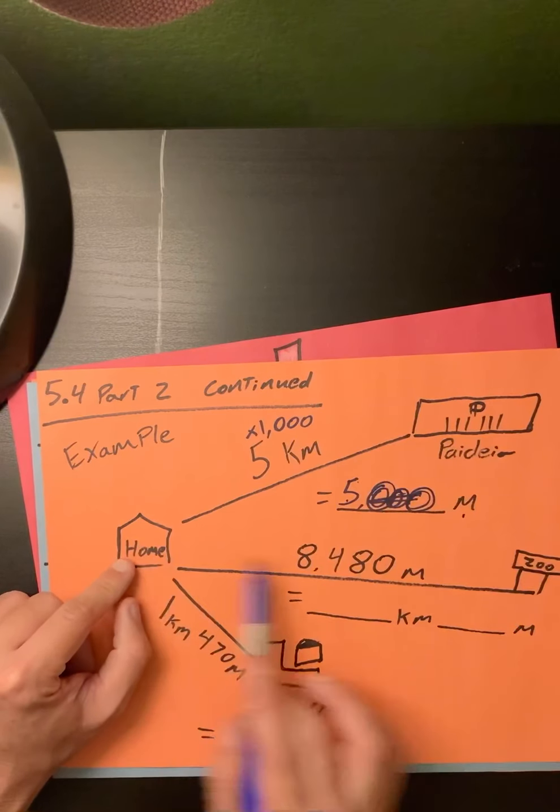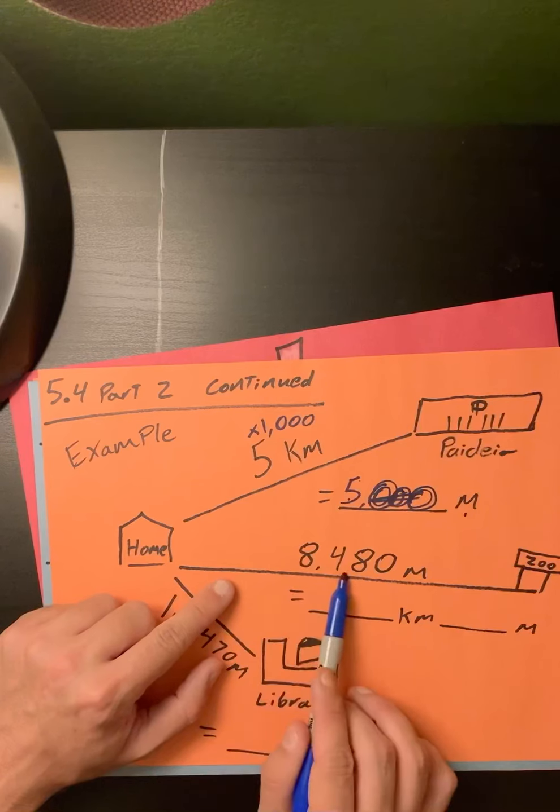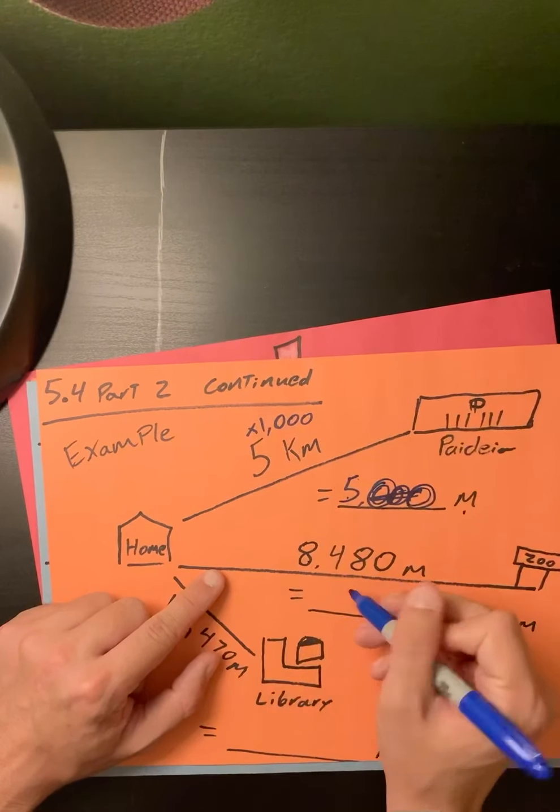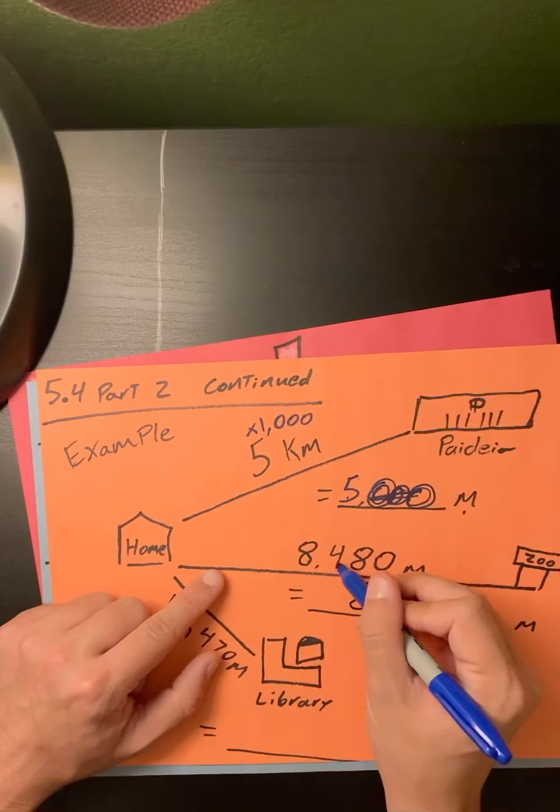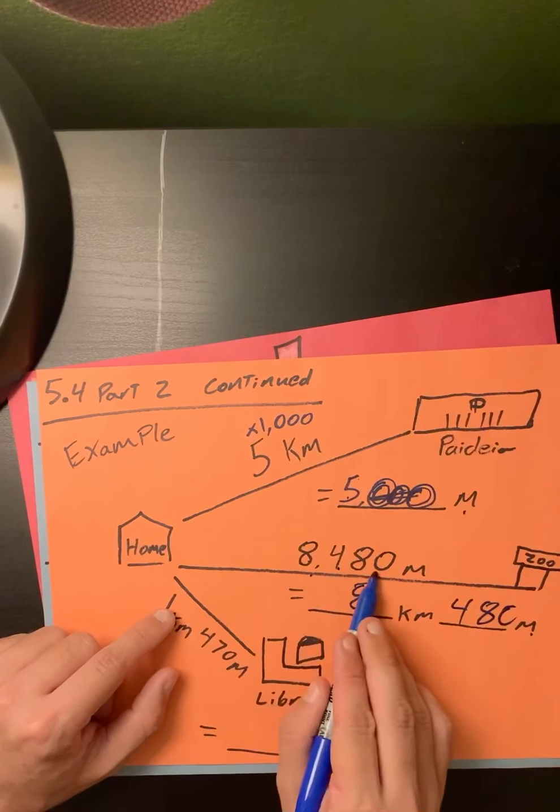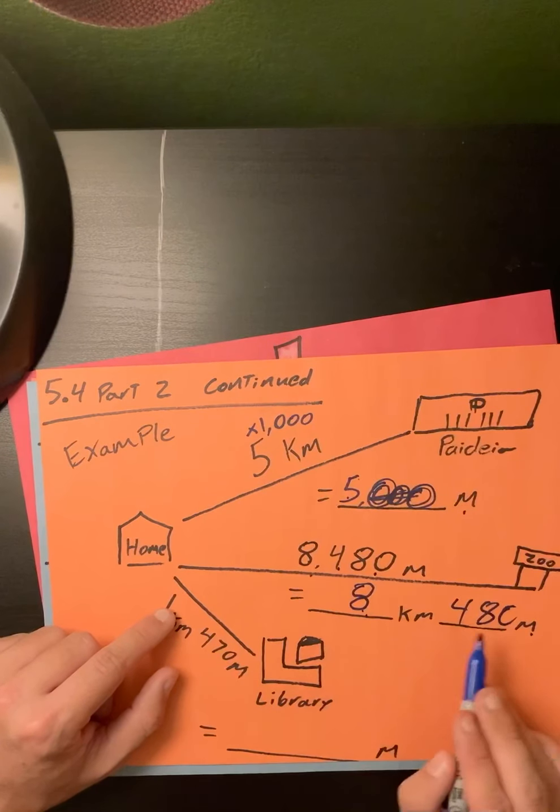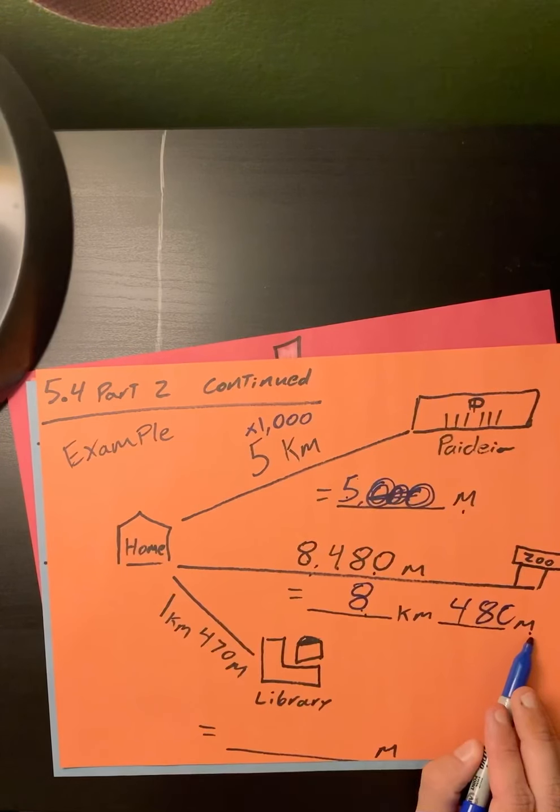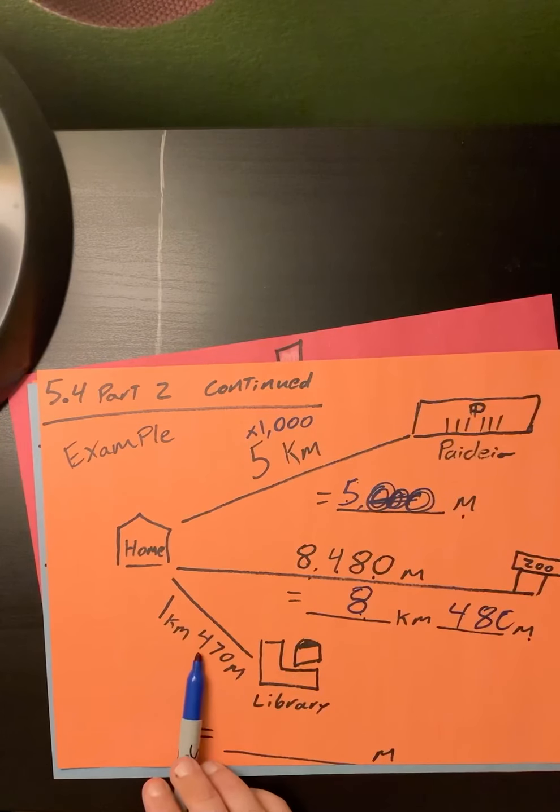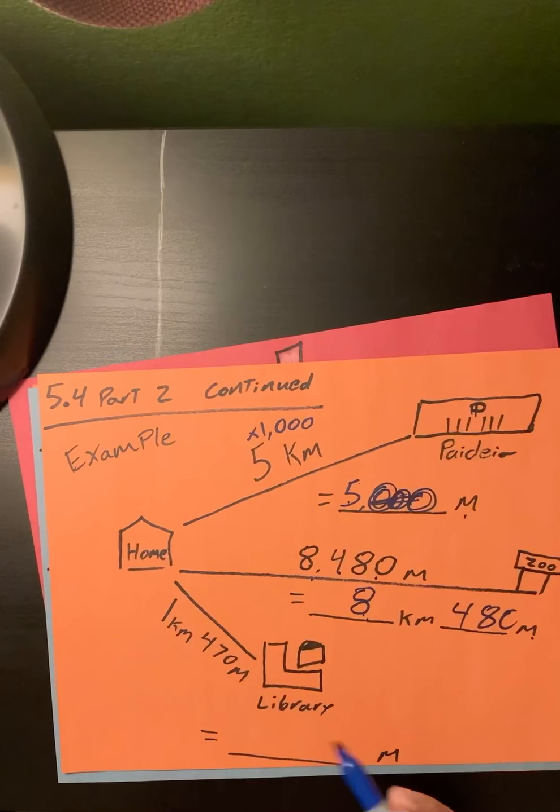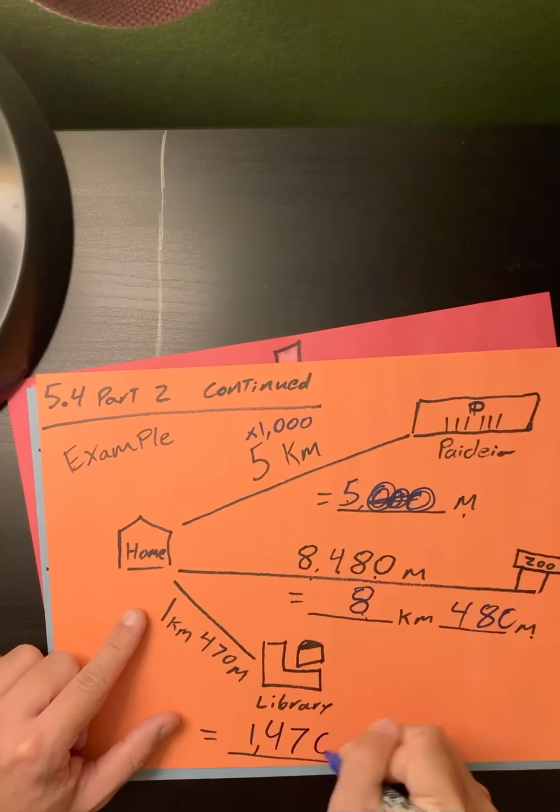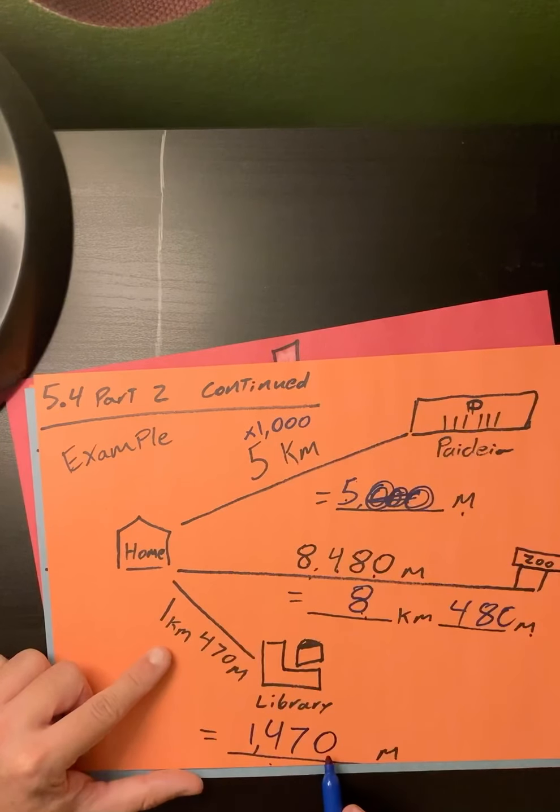If I was to go from my home to the Phoenix Zoo that's about 8,480 meters. To convert this to kilometers and meters, I'd take my thousands place and that goes in my kilometers. My hundreds, tens, and ones place goes in my meters. So 8,480 meters is equal to 8 kilometers and 480 meters. Lastly, if I wanted to convert my kilometers and meters to just meters, I have 1 kilometer and 470 meters to get to the library. I would have a distance of 1,000 plus 470, which is 1,470 meters.